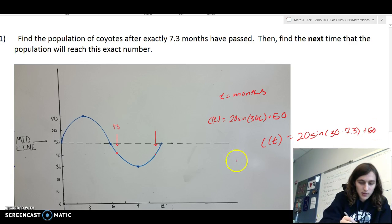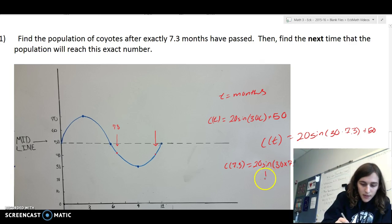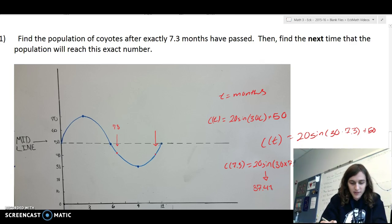And so we can rewrite it. We can say c of 7.3 equals 20 sine 30 times 7.3 plus 50. If you do this out in your calculator, you should get about 37.41 coyotes. And fractional coyotes are okay for now.